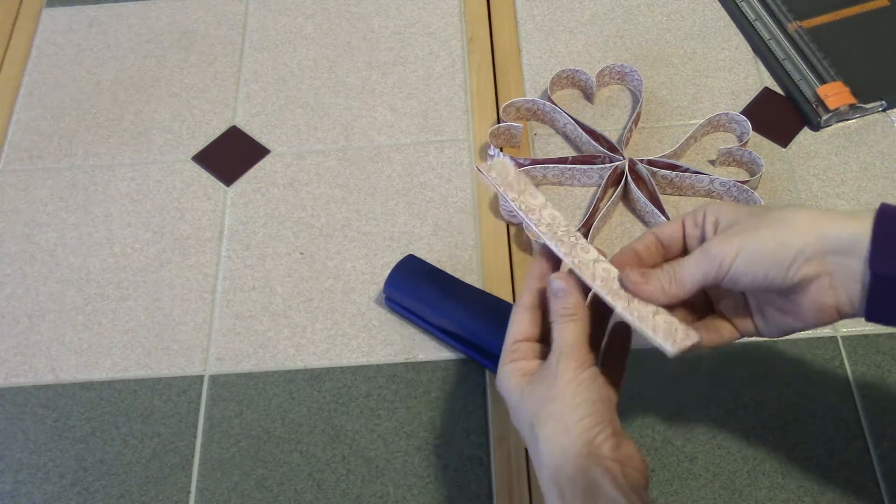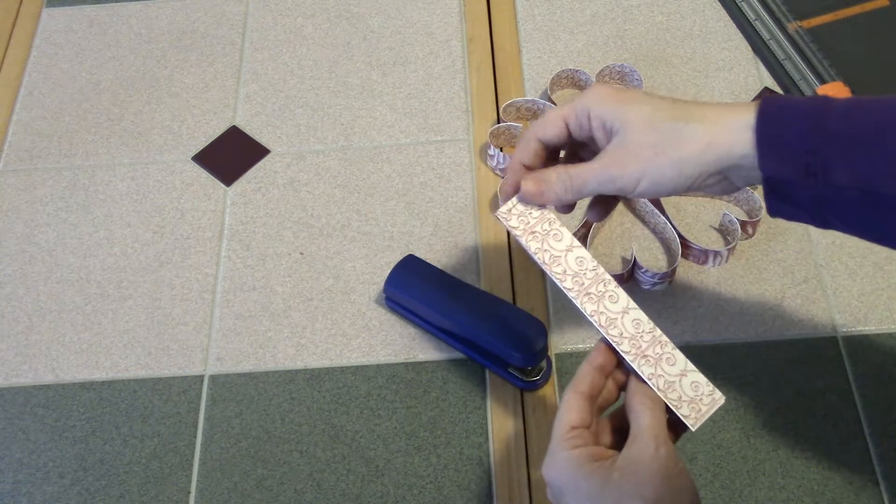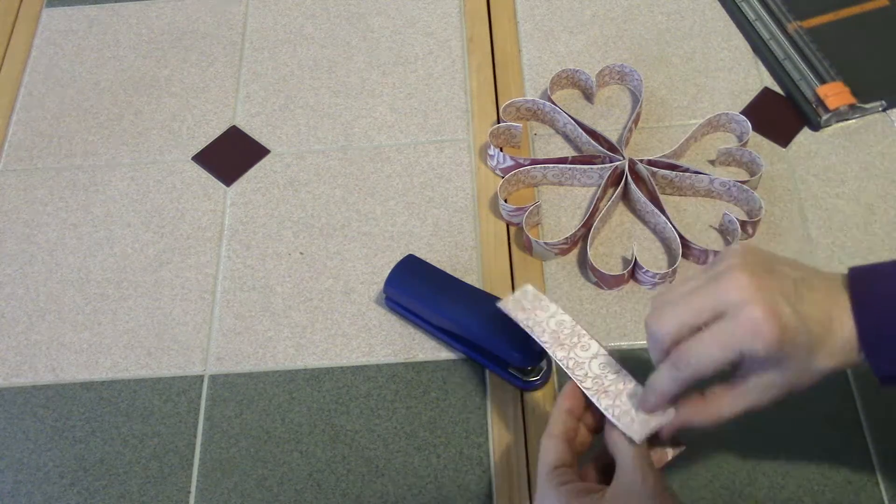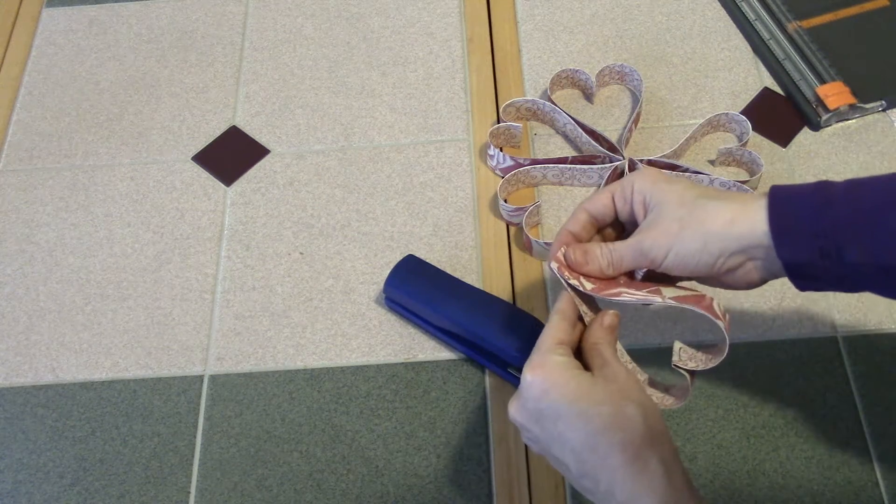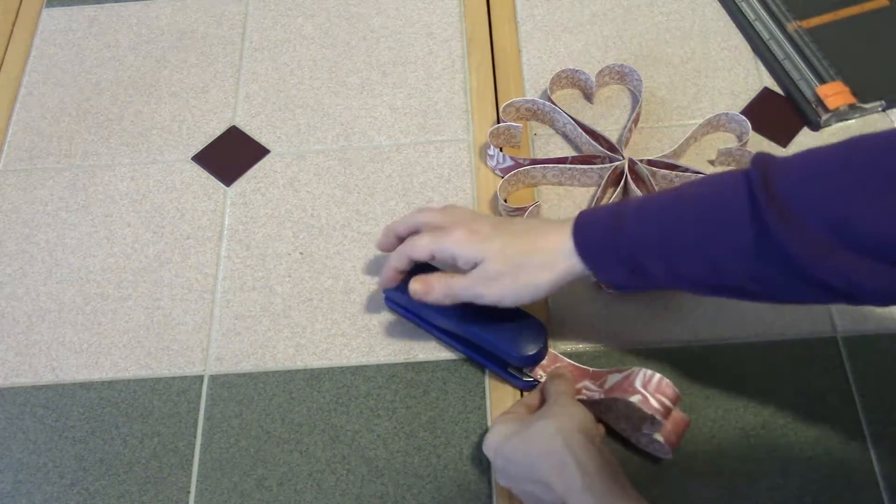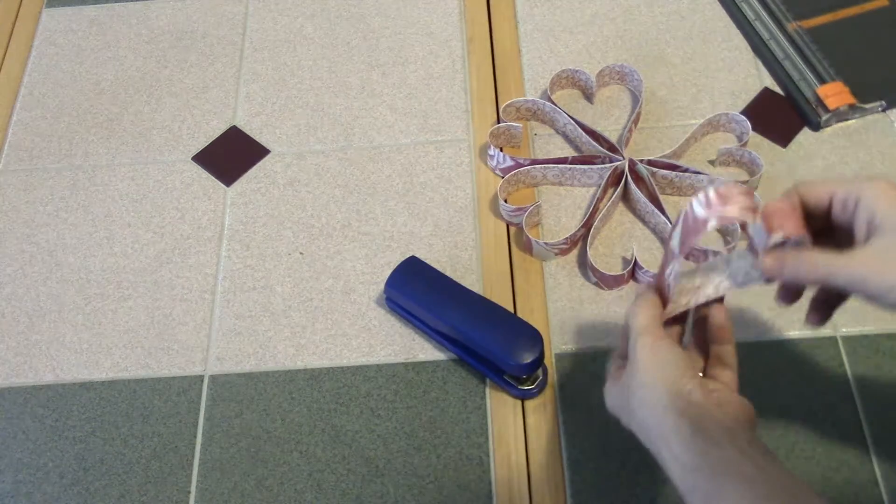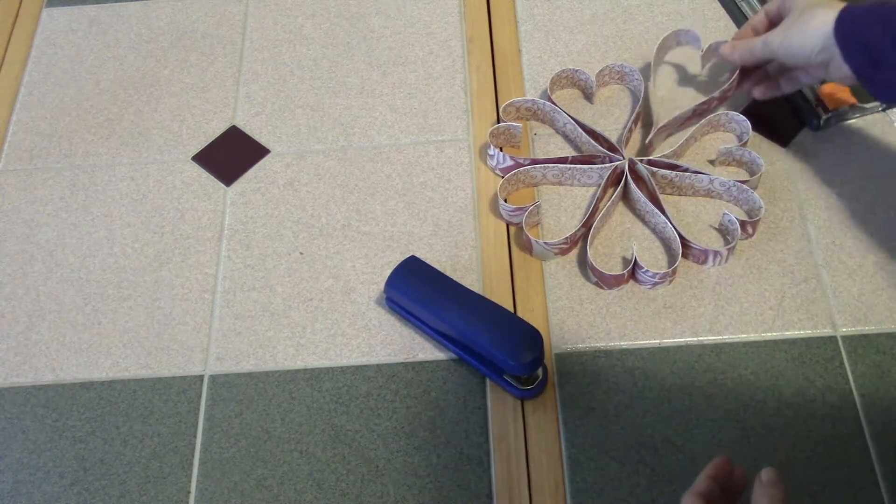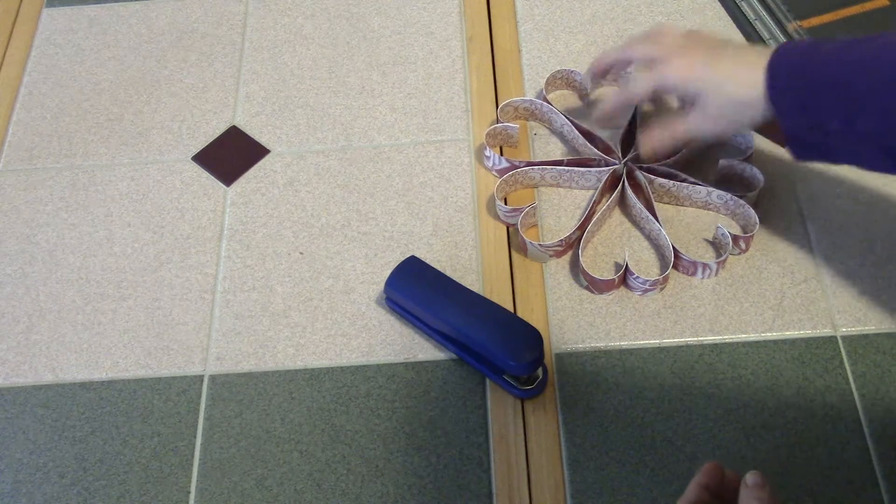I folded it in half and stapled it a little bit. That's going to give the middle. Then when I wrap this around and staple this side, I have a heart, and that's going to go in to make my decoration.